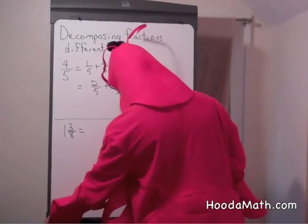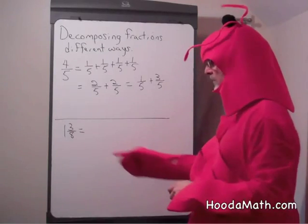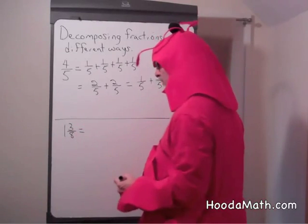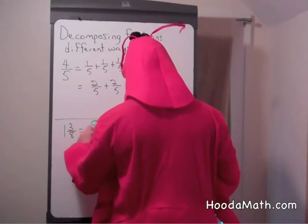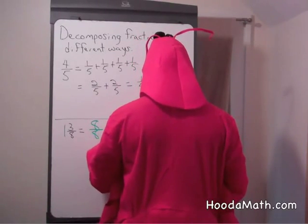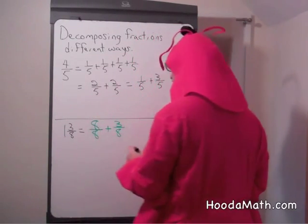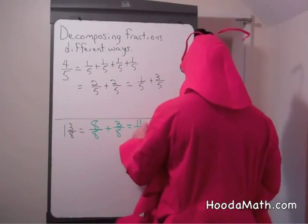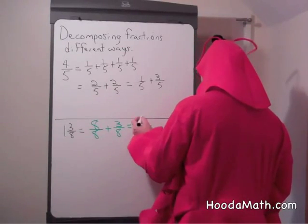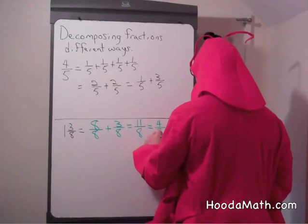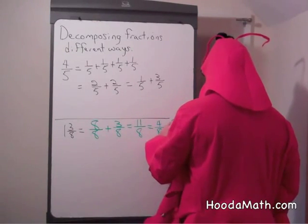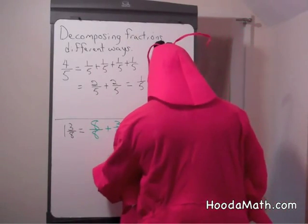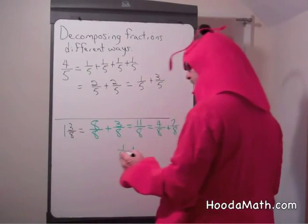Can you think of different ways we could write a little more complicated problem? This is a mixed number, one and three-eighths. Well, how many eighths are in one? Well, we could have eight-eighths plus three-eighths. That's a total of what? Eleven-eighths. We could write that as four-eighths plus seven-eighths, anything where the numerators add up to eleven. One-eighth plus ten-eighths.